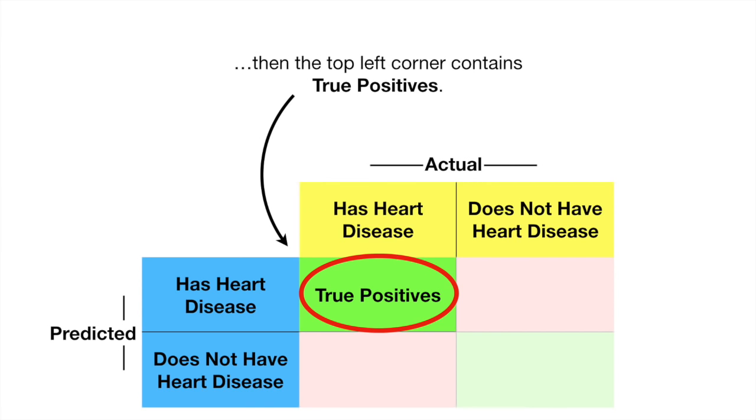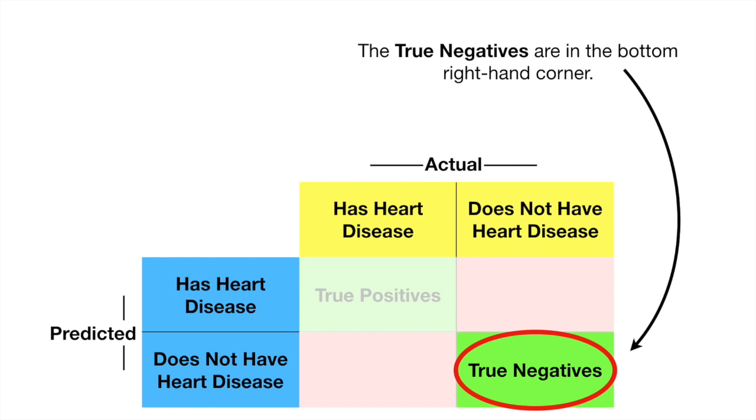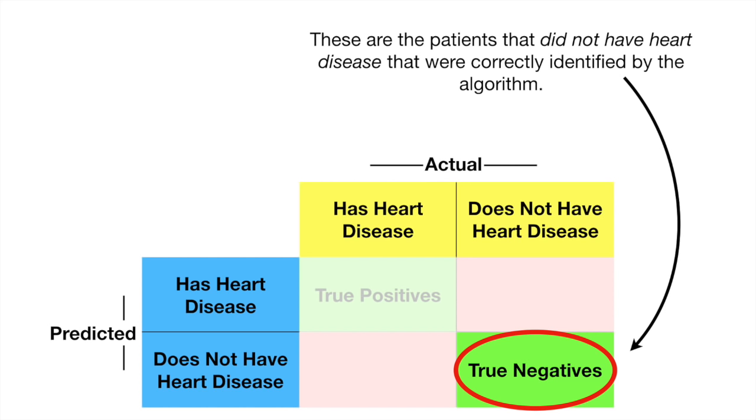The top left corner contains true positives. These are patients that had heart disease that were correctly identified by the algorithm. The true negatives are in the bottom right-hand corner. These are patients that did not have heart disease that were correctly identified by the algorithm.